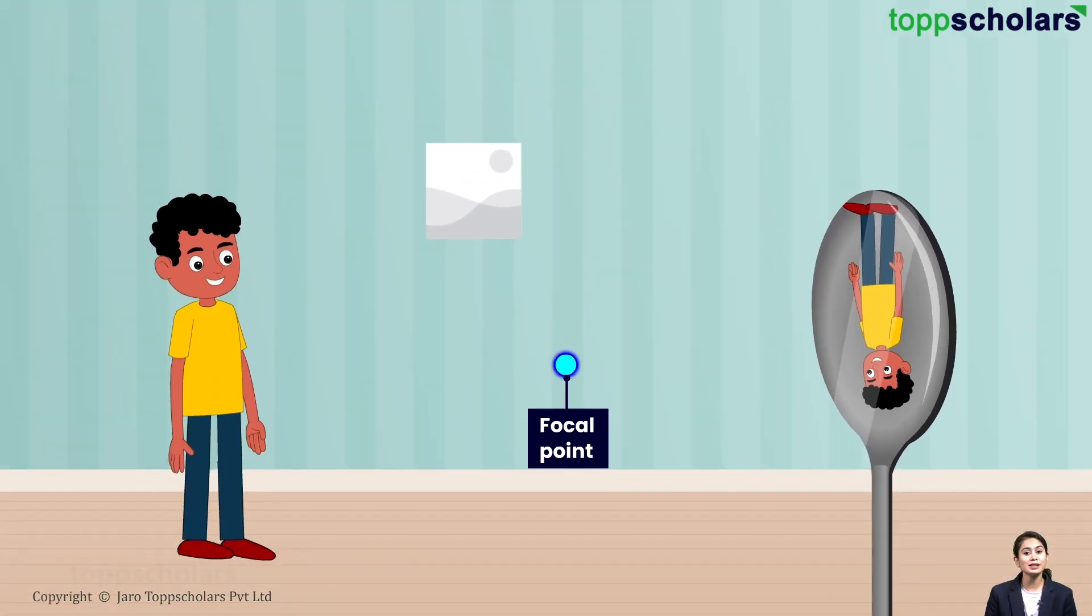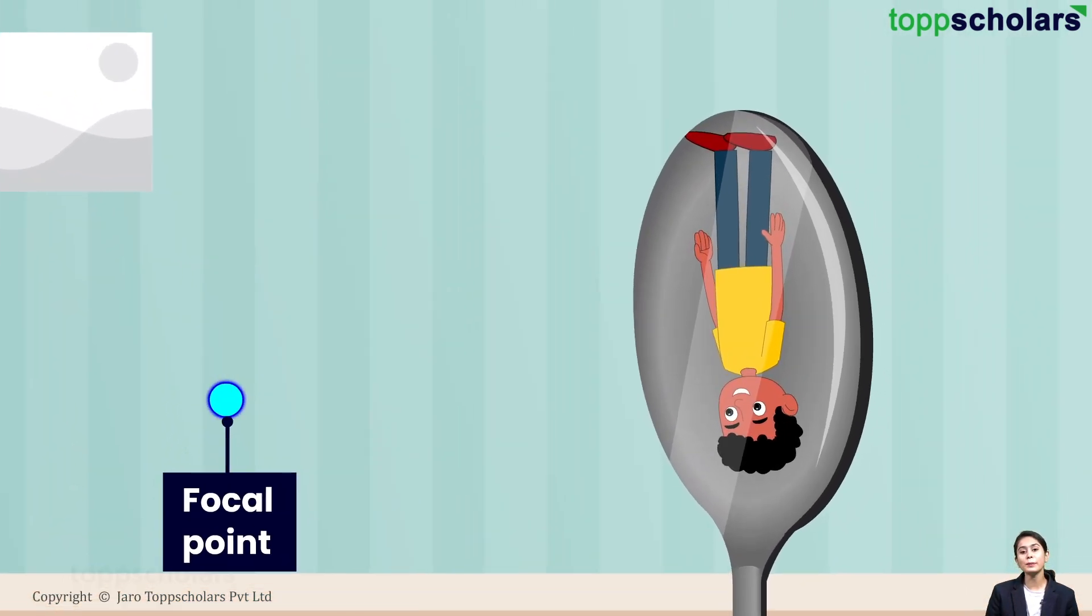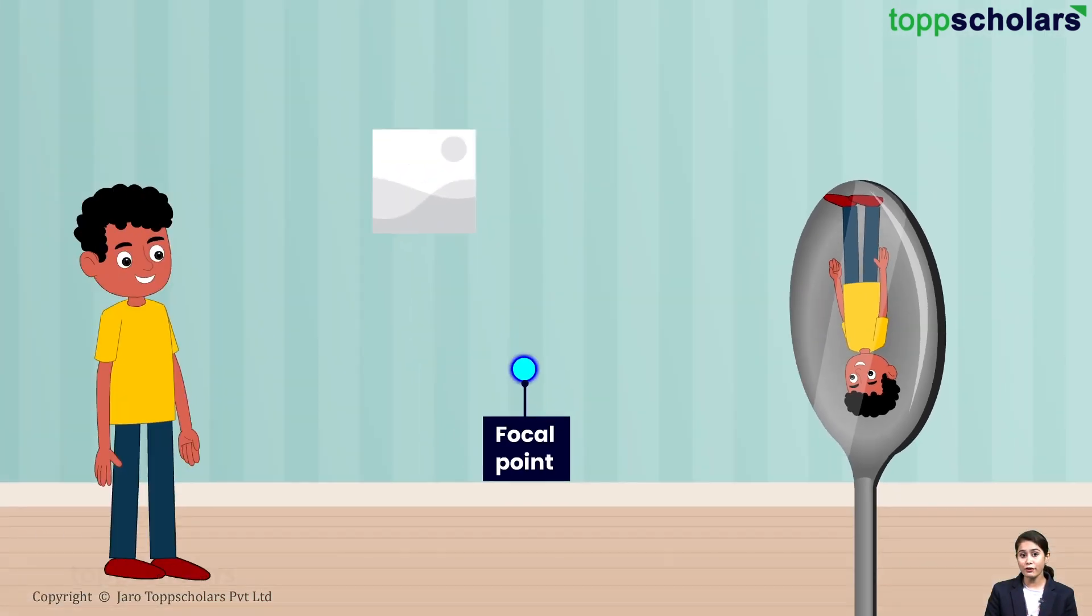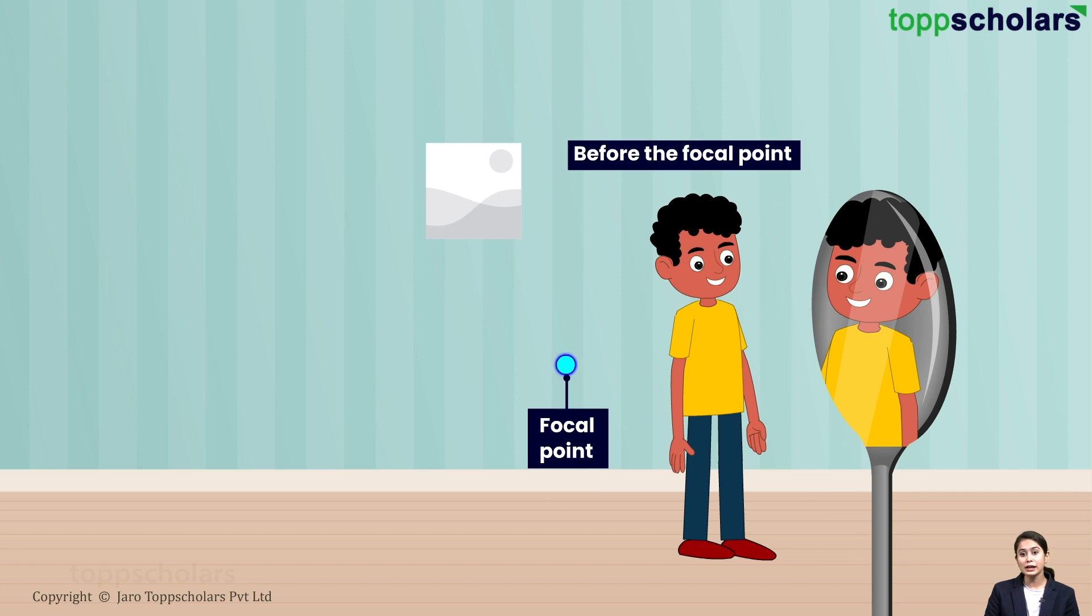One thing to notice here is that when you stand beyond the focal point, only then you will be able to see an inverted image of yourself. However, if you stand before the focal point, the image formed will be upright.